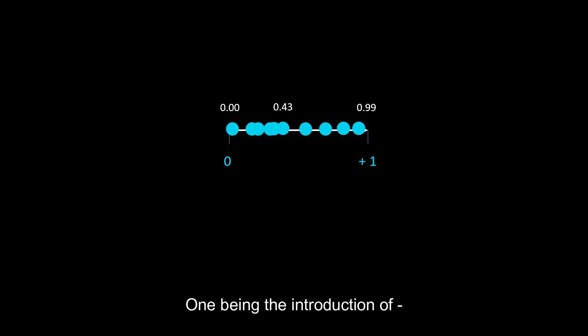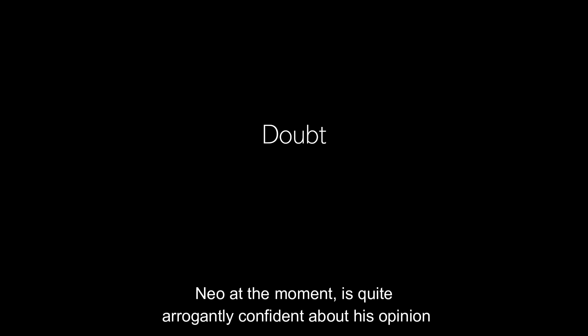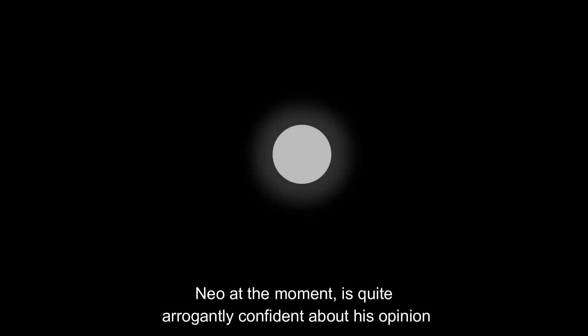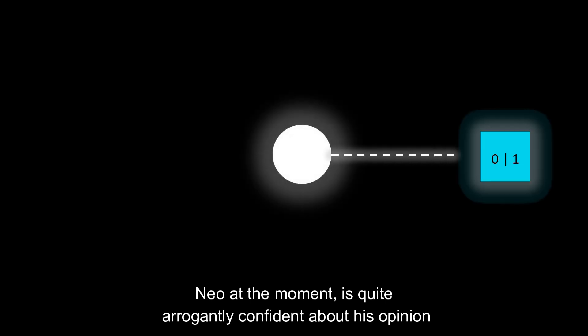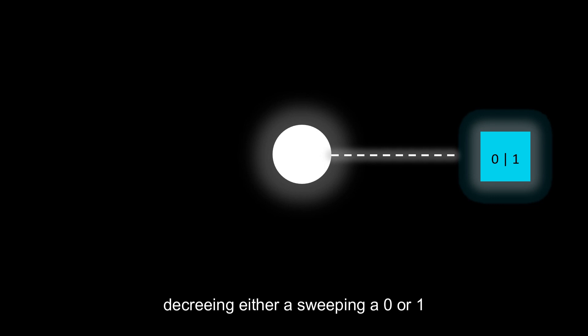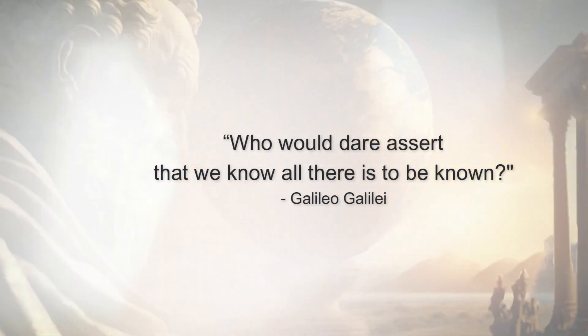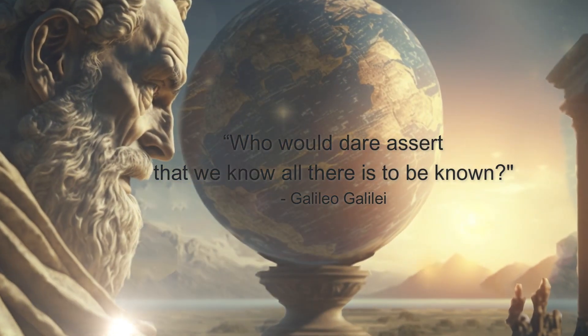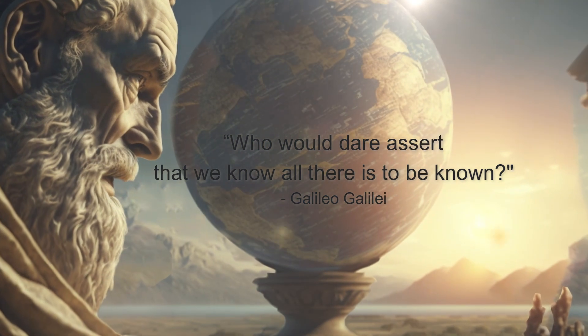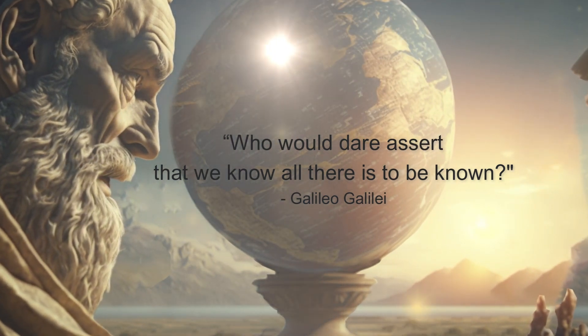One being the introduction of doubt. Neo, at the moment, is quite arrogantly confident about his opinion, decreeing either a sweeping 0 or 1. True intelligence, on the other hand, is always doubtful and uncertain about the potential unknowns.